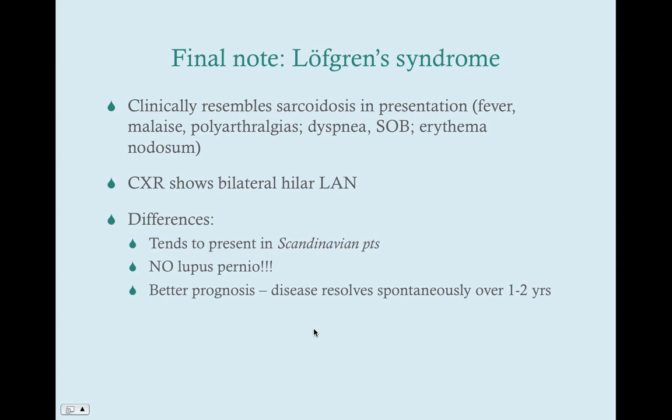Lofgren syndrome is something that should always be considered with sarcoidosis. It clinically resembles sarcoidosis in that you get constitutional symptoms like fever and malaise, polyarthralgias, respiratory symptoms like dyspnea and shortness of breath, and skin symptoms like erythema nodosum. When you get a chest x-ray you're going to see bilateral hilar lymphadenopathy. The key difference is that Lofgren syndrome tends to present in Scandinavian patients, whereas sarcoidosis tends to present in black patients — so if you're practicing in the upper Midwest, think Lofgren syndrome.